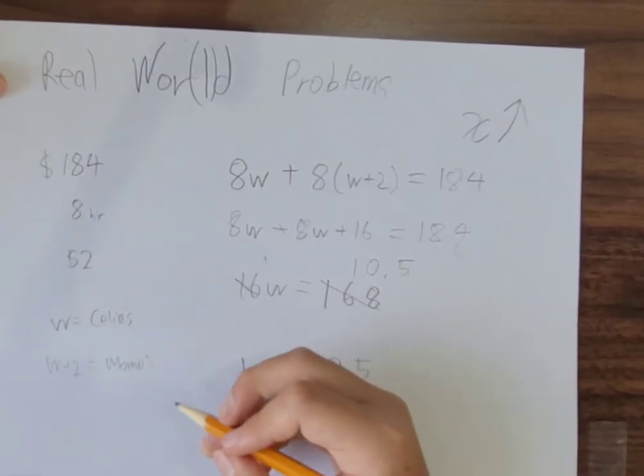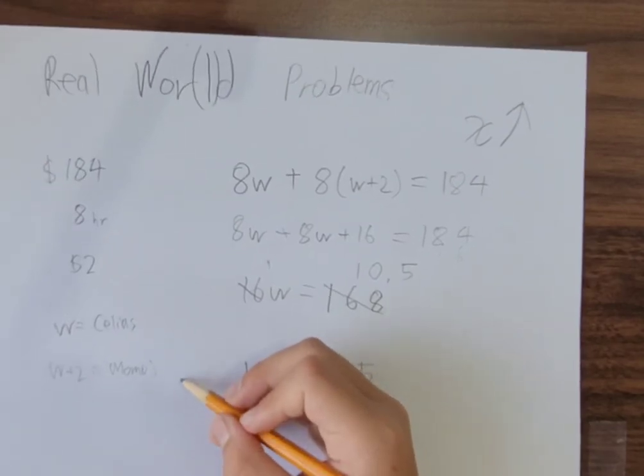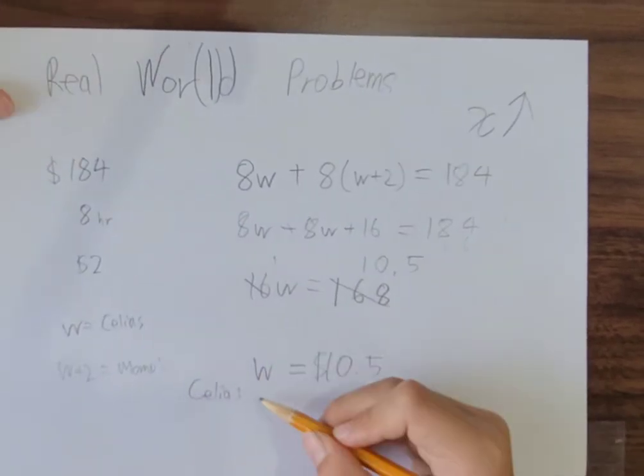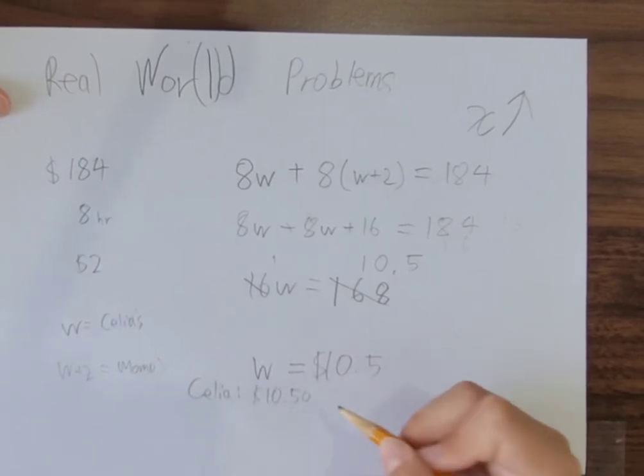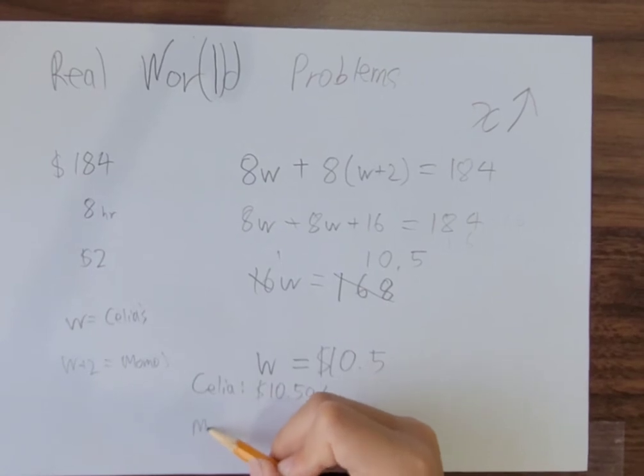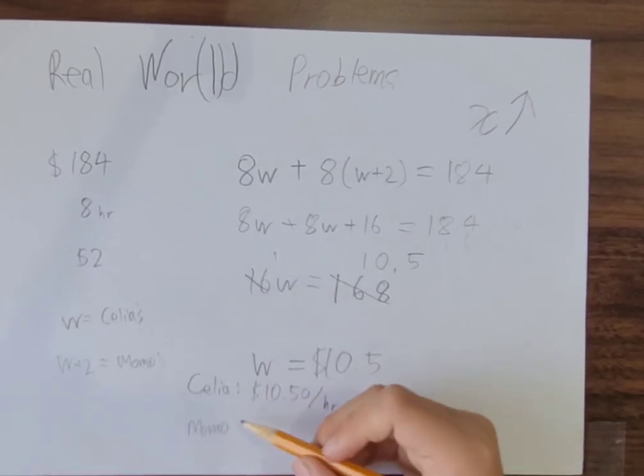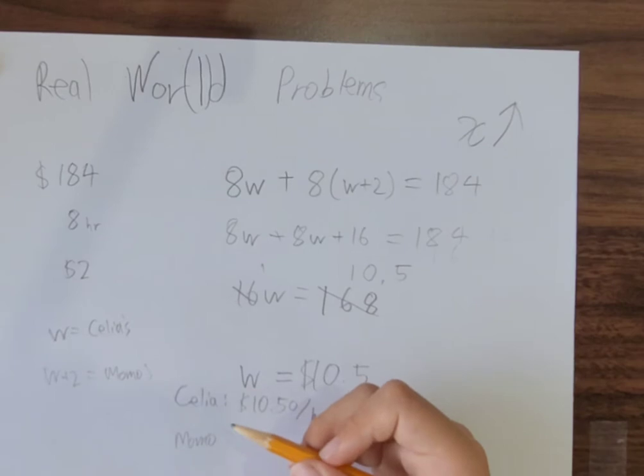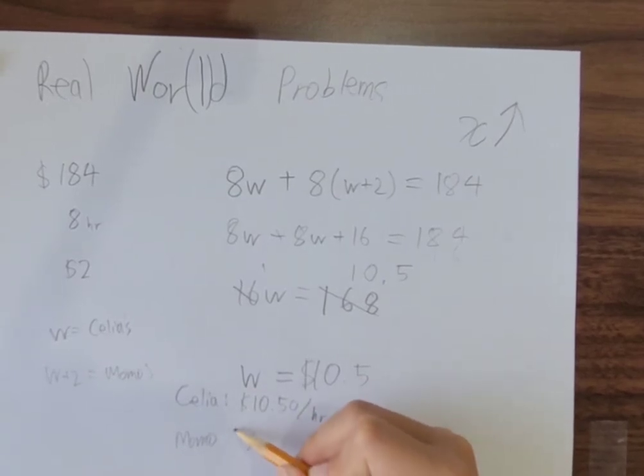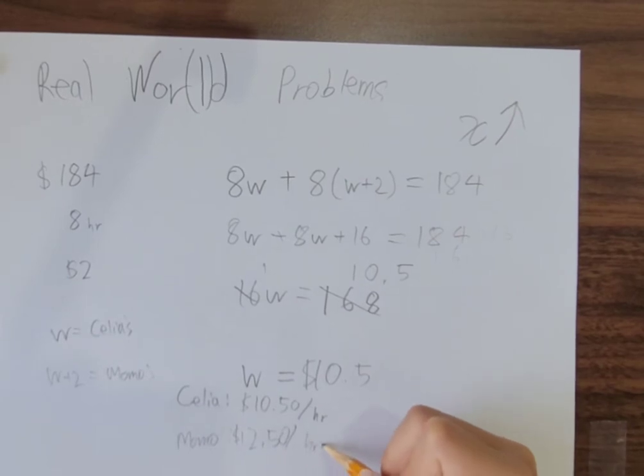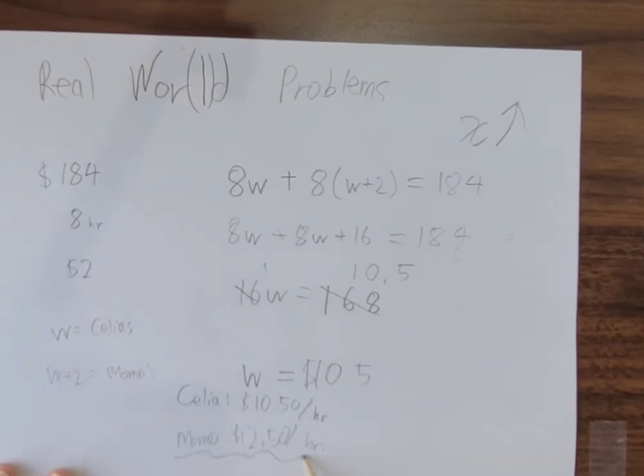So here are our answers. Celia earns $10.50 per hour, and Momo earns $12.50 per hour. If we check it all, we get $184 equals $184. This is one of our word problems and one of the ways that we can solve them. And by the way, let me draw a bit of Celia and Momo.